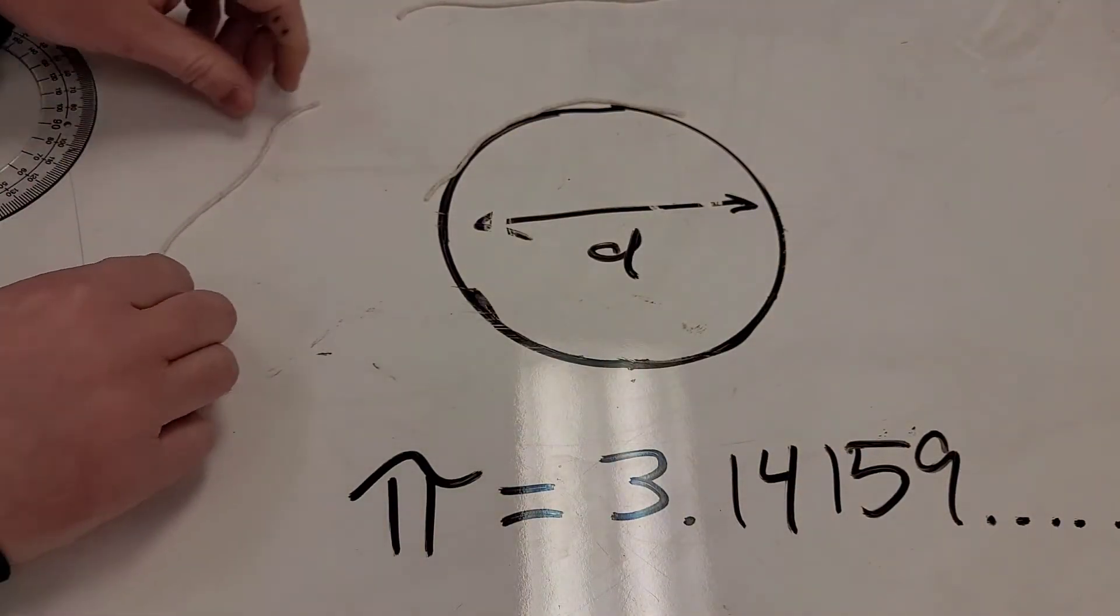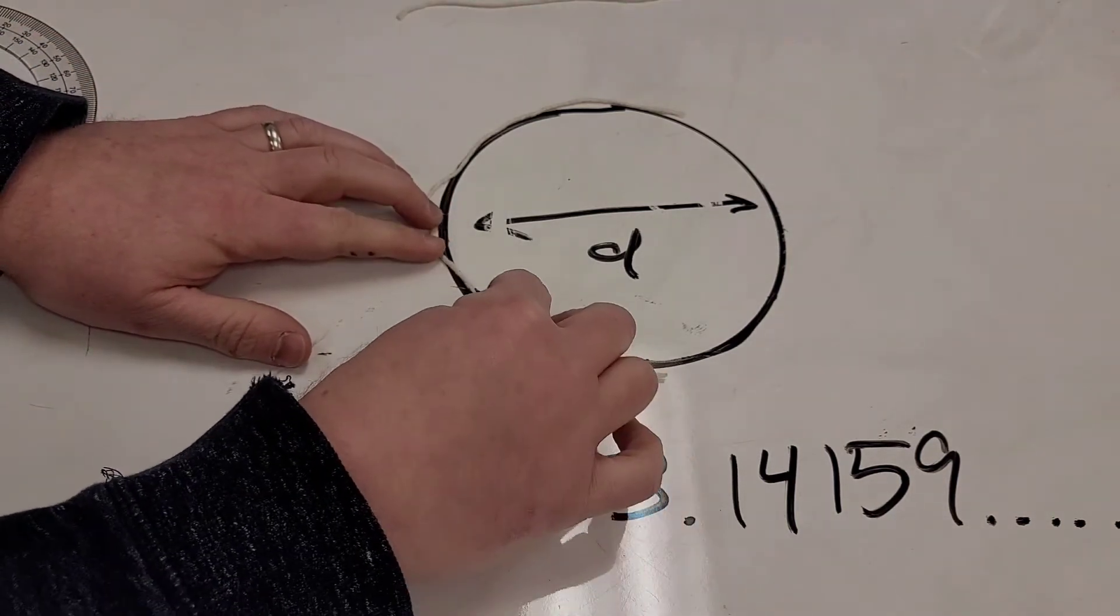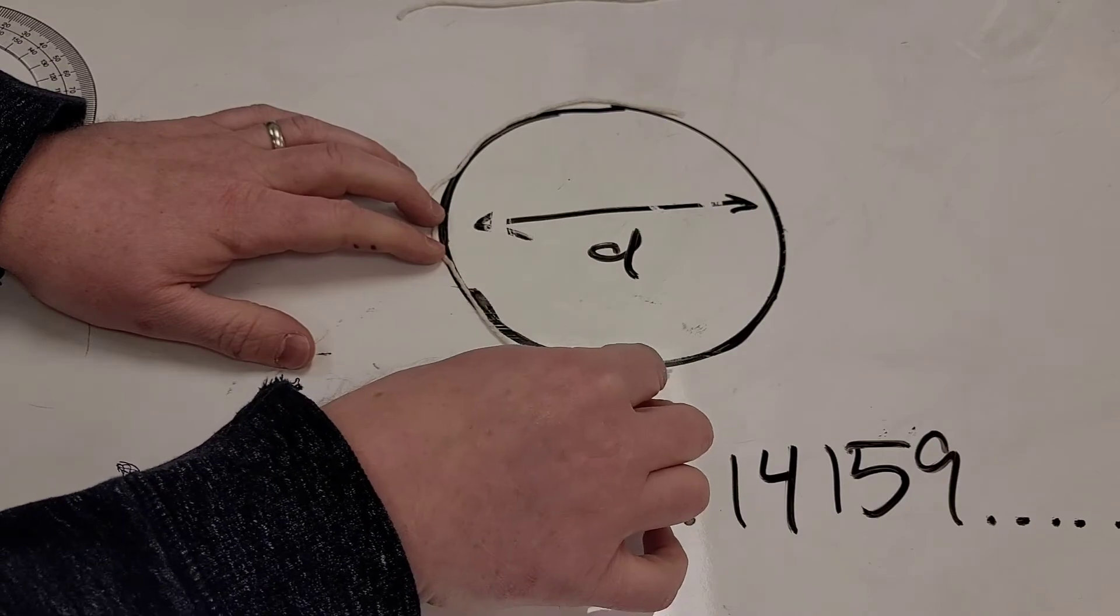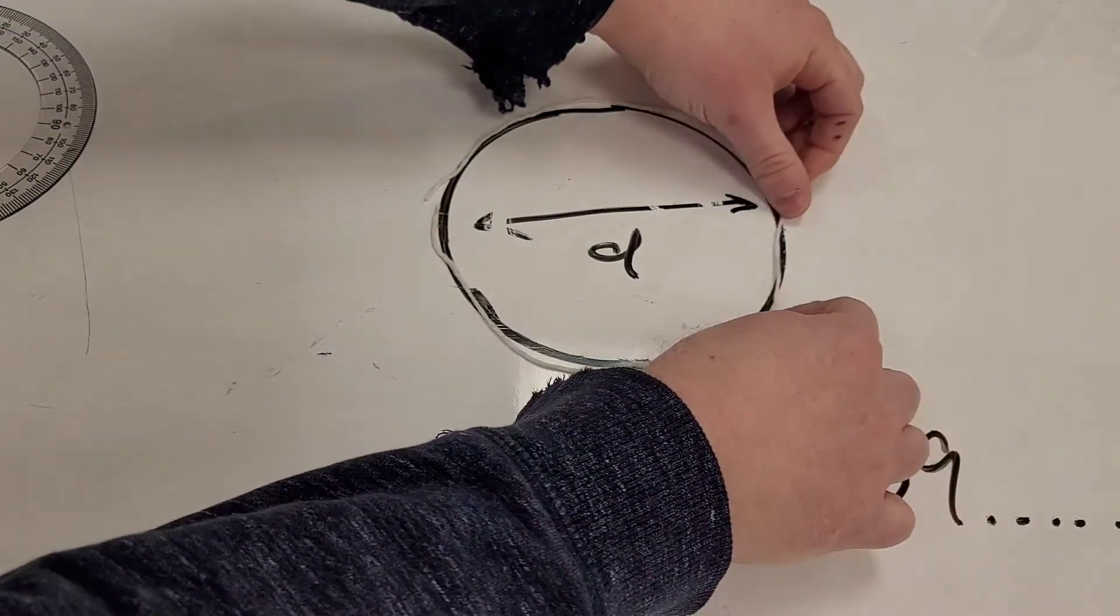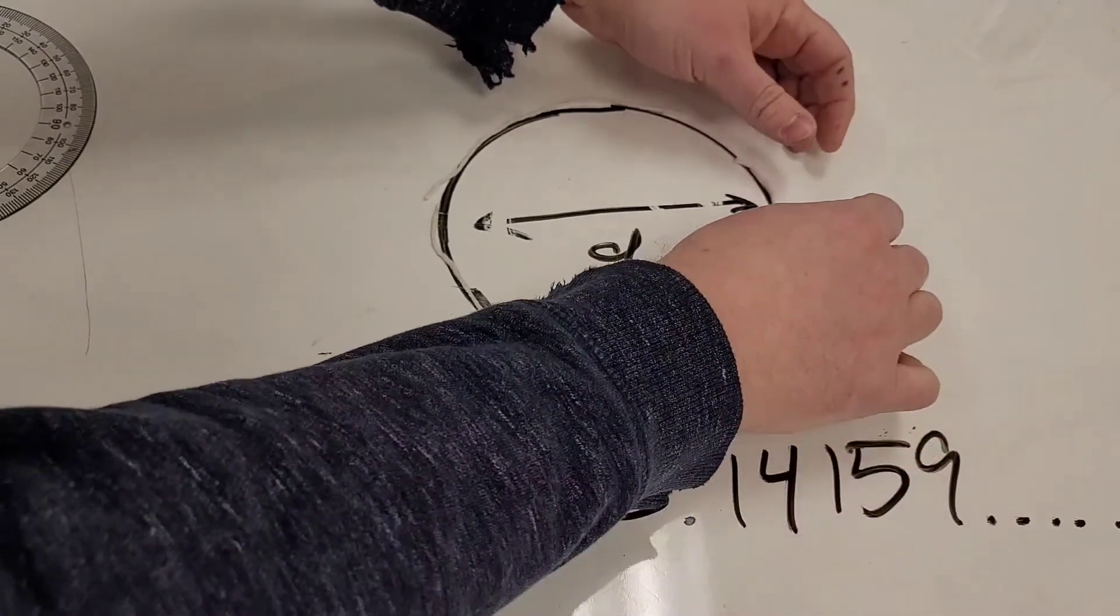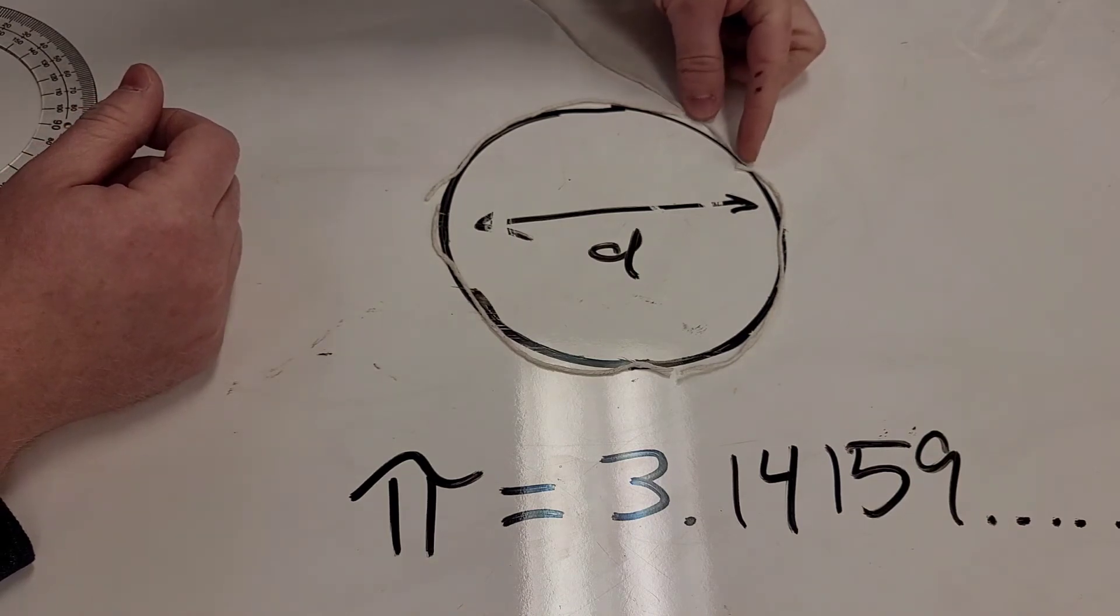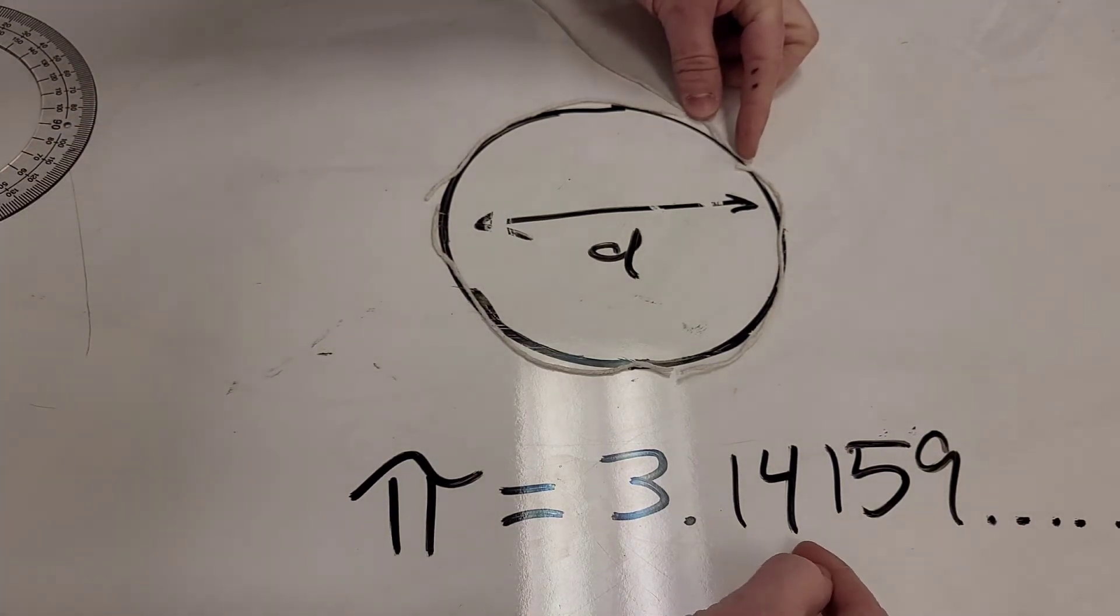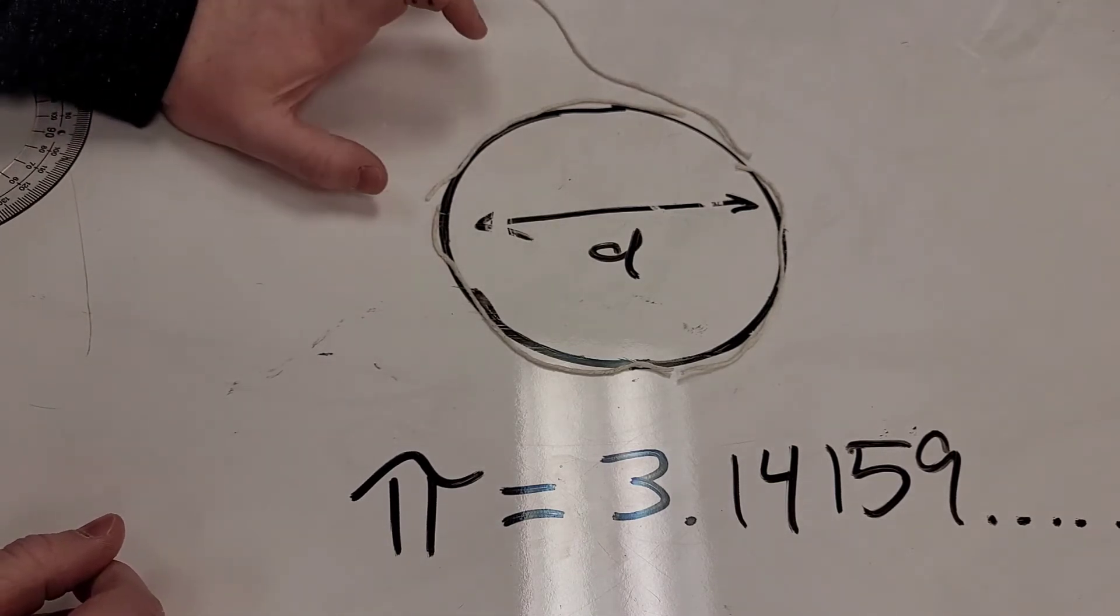So I'm going to take one diameter, two diameters, and you might already be making a prediction as to how many this is going to take. Three diameters, and not quite a fourth, but a portion of the fourth will go right here. What portion will that be? That will be 0.14159 going on and on, and the reason why is because every circle...